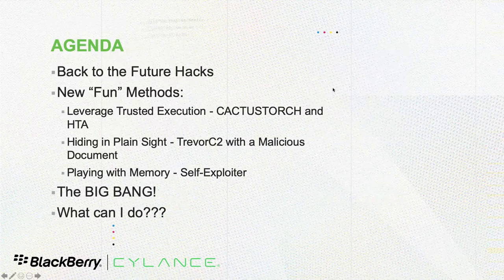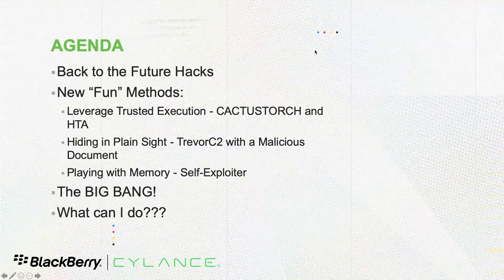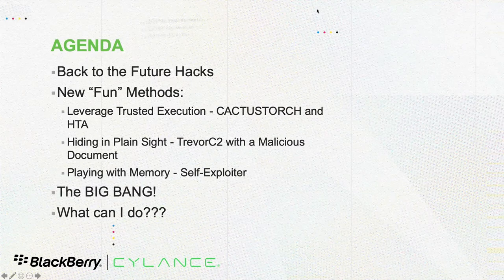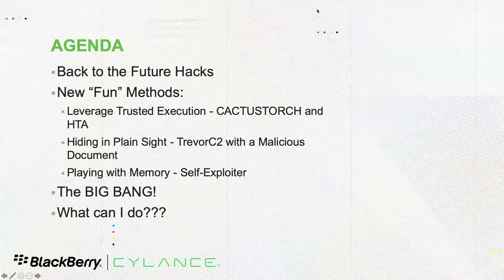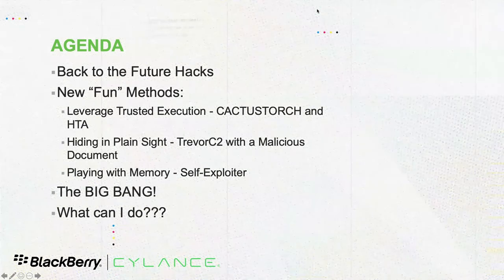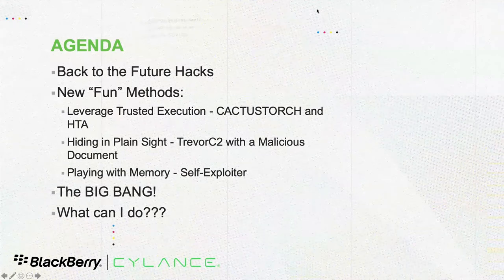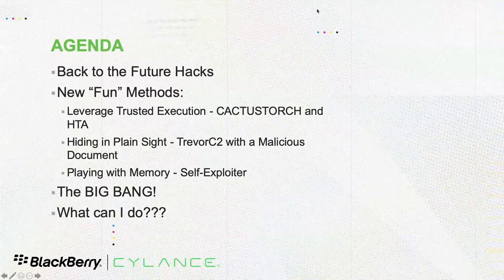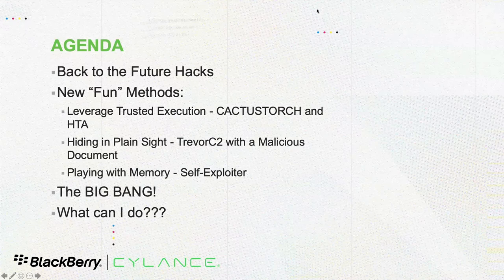Just like we did last week, we're going to run through a couple of older things that are still able to bypass a lot of next-gen technology. Then we're going to run through three primary new methods: leveraging trusted execution, hiding in plain sight, and playing with some memory. Then we'll have a big bang, and then close by summarizing some of the technologies you see today. The purpose of this webinar is to show how Silence technology is going to defend and prevent the attacks we showed you last week.